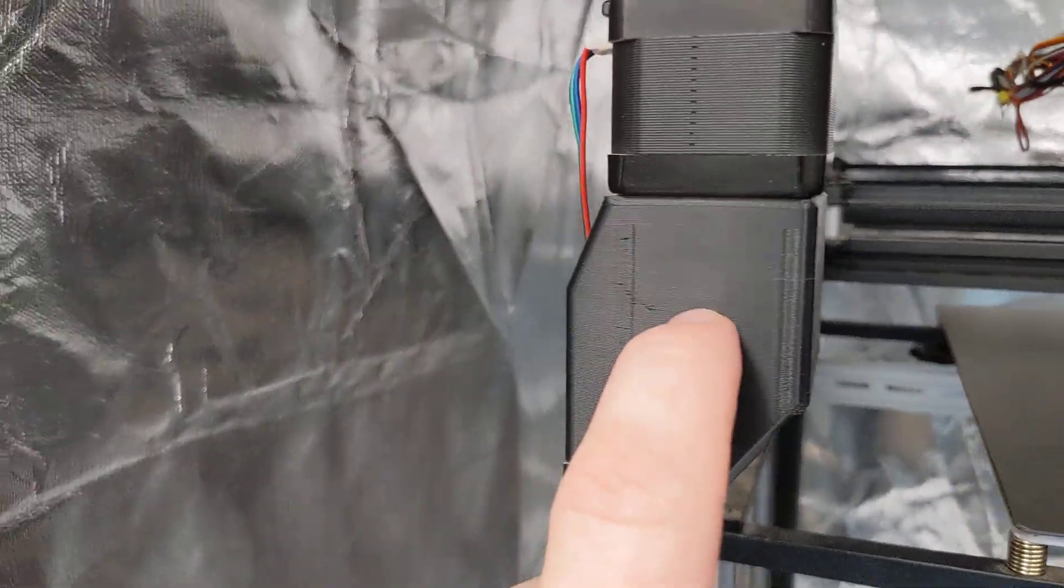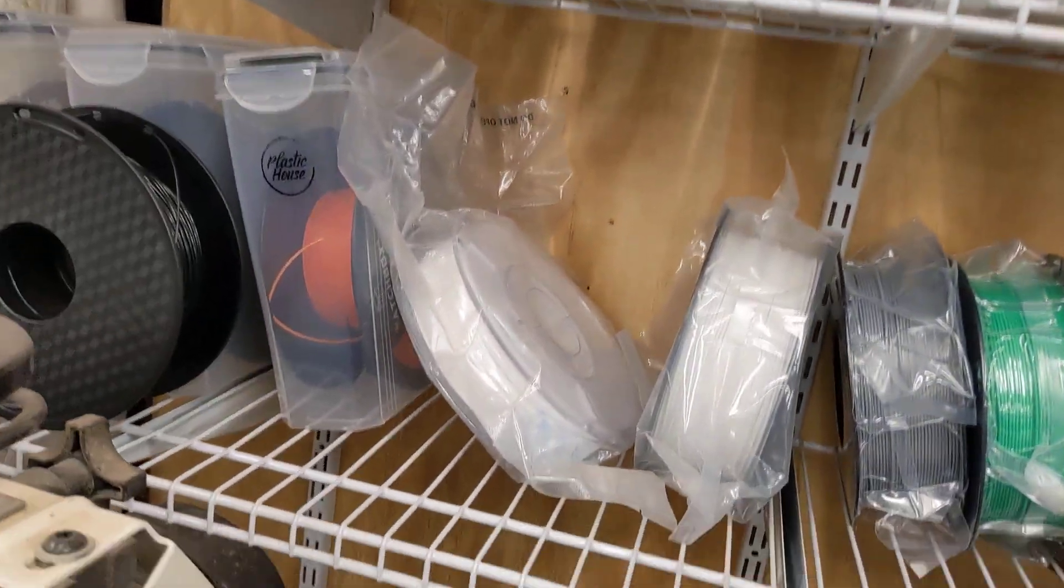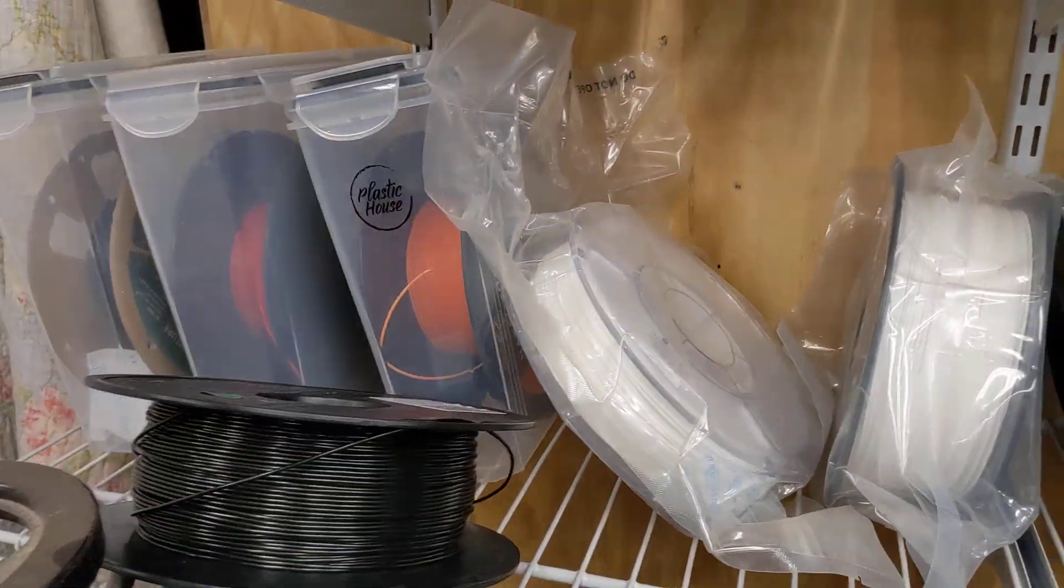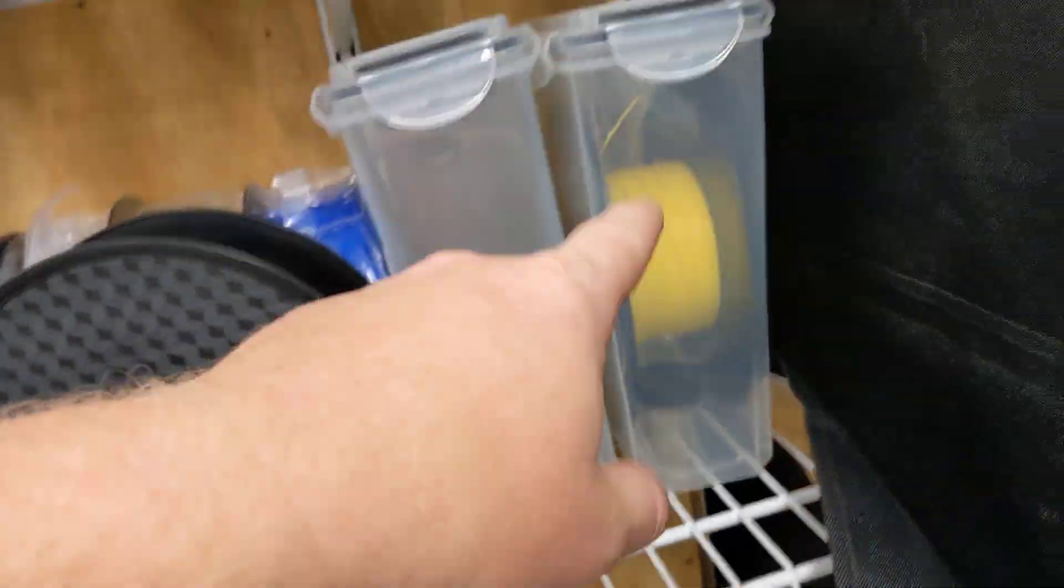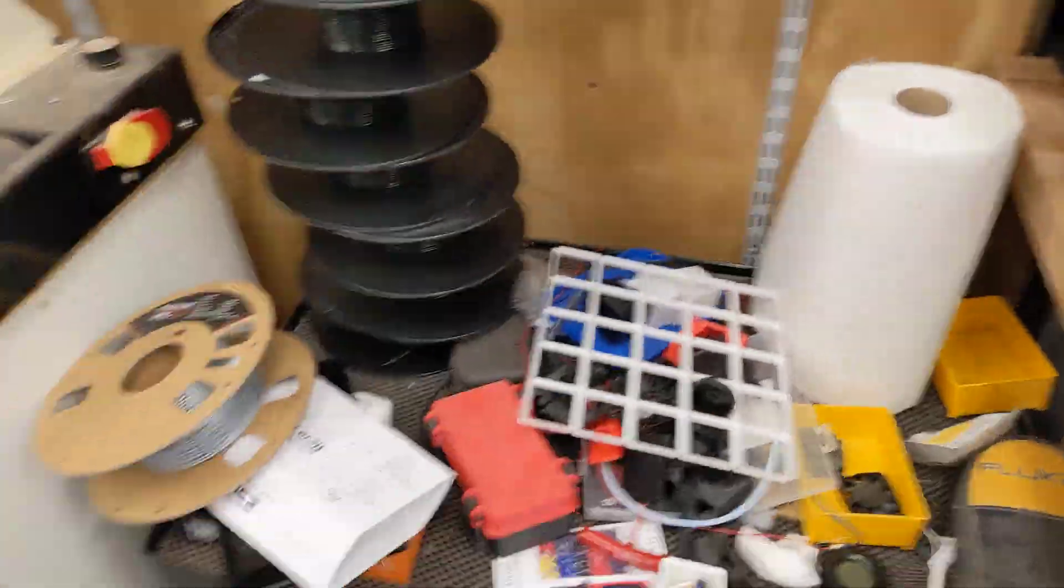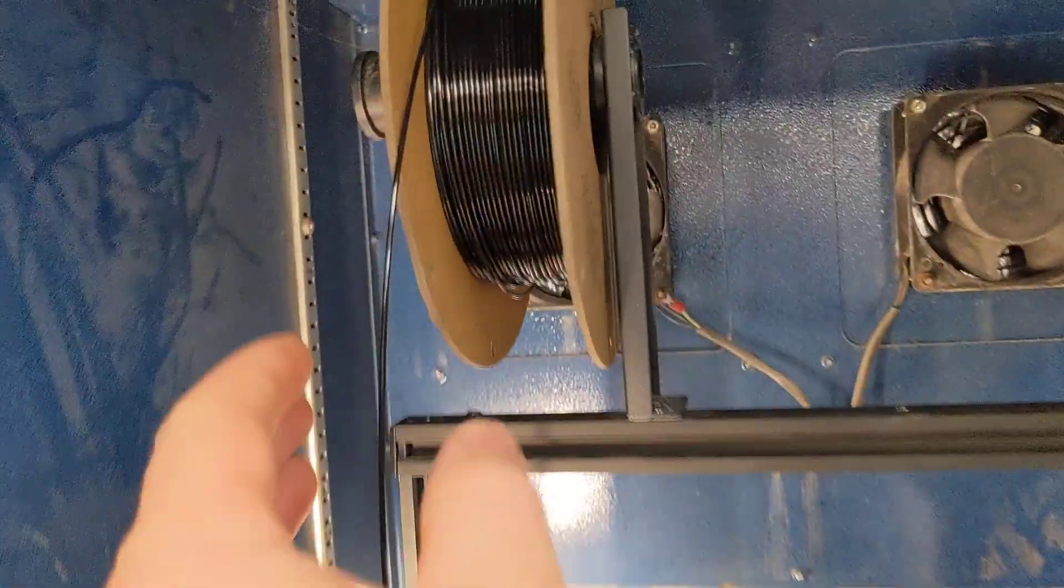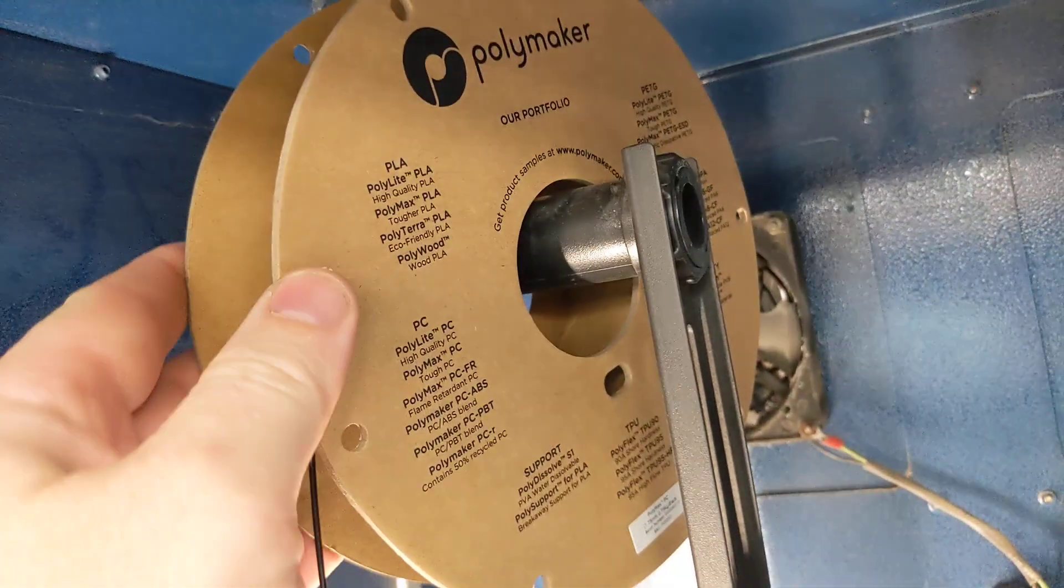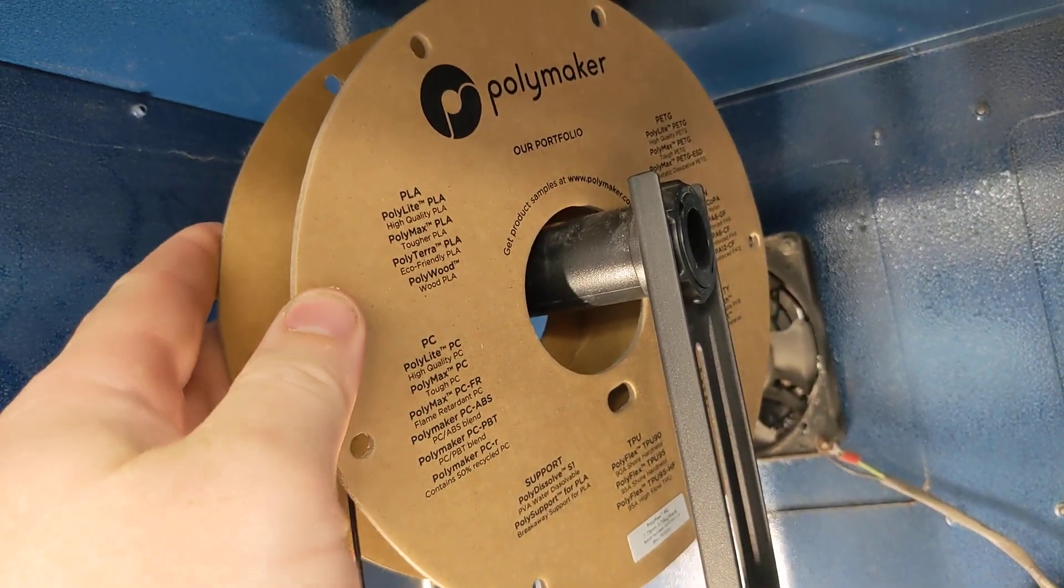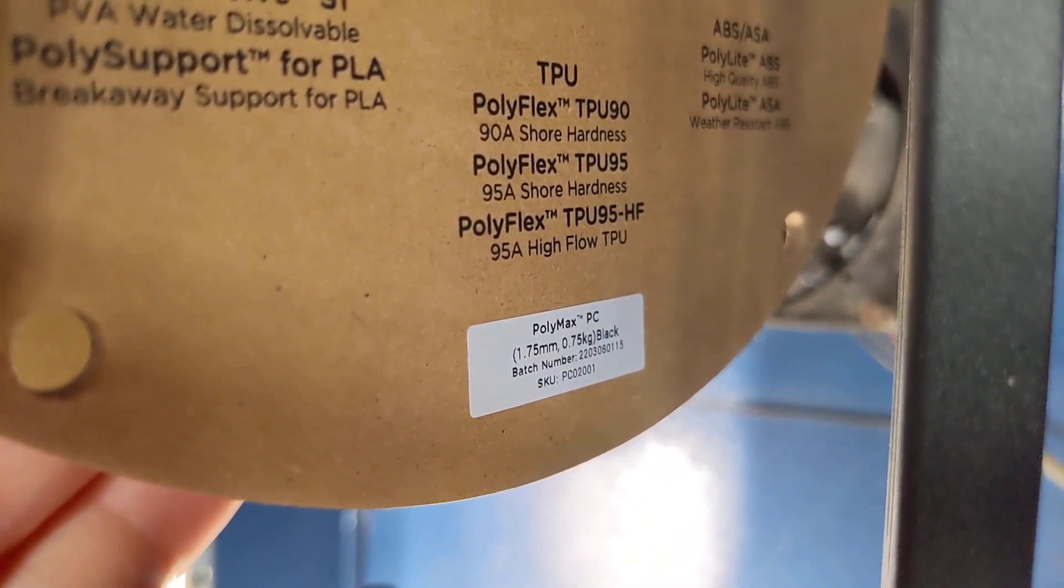Also the material that I used is... where is it? There it is. It's on my other 3D printer. It's this Polymaker PC blend or what is it, sorry, Polymax PC there we are.